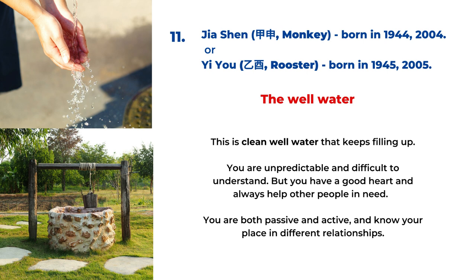The eleventh type is for the Jia Shen year and Yi You year, for birth years 1944, 1945, 2004, and 2005. It's called the well water. The water is very clean in the well and always comes back to fill up when you need it. For the personality, you are more unpredictable and difficult to understand, but you have a good heart and always help other people in need. You are both passive and active and know your position in different relationships — pretty balanced, just like the well water.